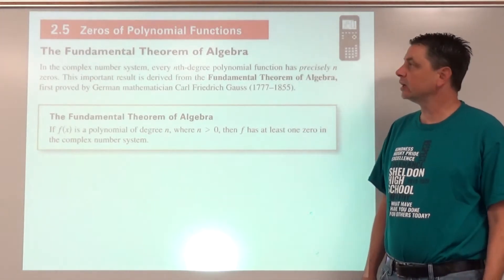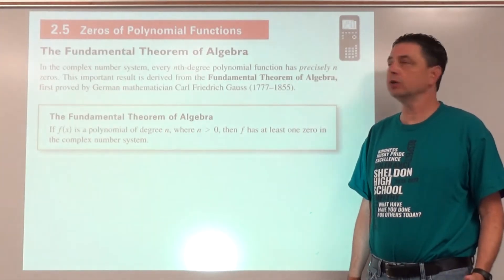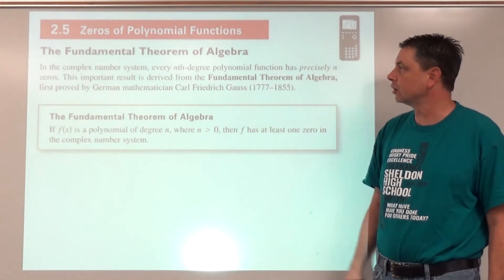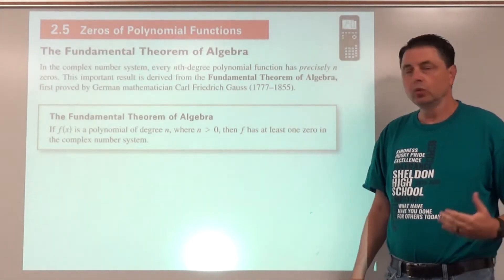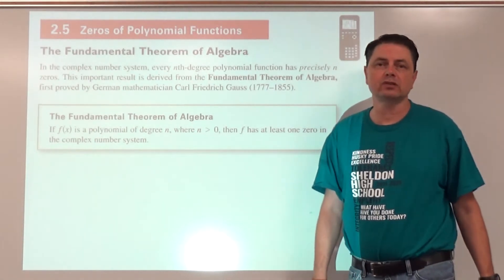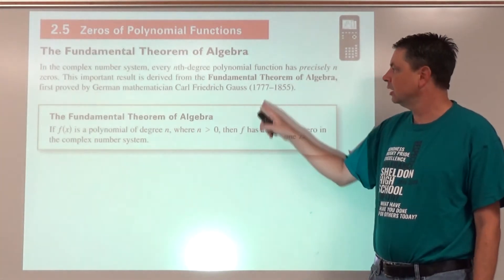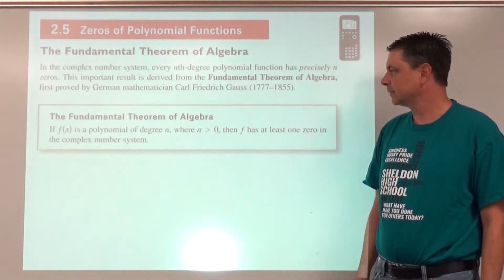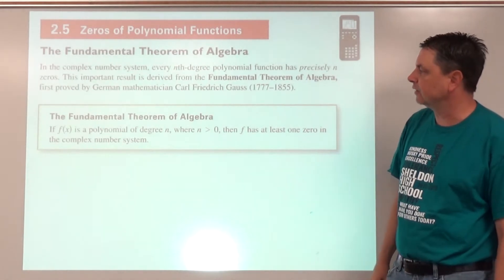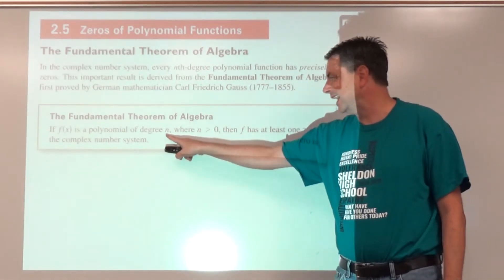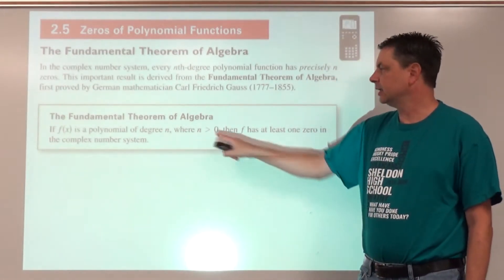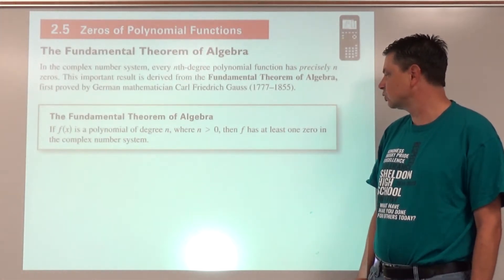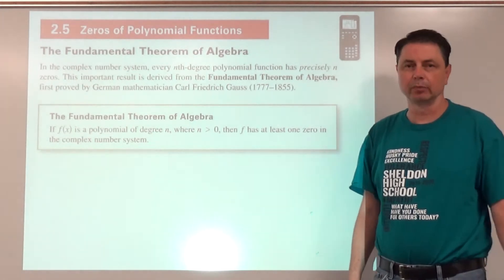Welcome to Hartman Math. Today we're going to take a look at finding zeros of polynomial functions based on the fundamental theorem of algebra, which was developed by Carl Friedrich Gauss, a German mathematician of pretty prominent renown. This theorem essentially says that if f of x is a polynomial of degree n, where n is greater than zero, then it has at least one zero in the complex number system.